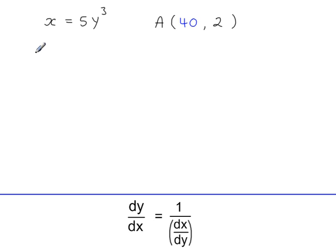And if we differentiate this, because it says x is equal to, we're going to differentiate x with respect to y. So it's dx by dy that we work out, so that gives us 15y squared.